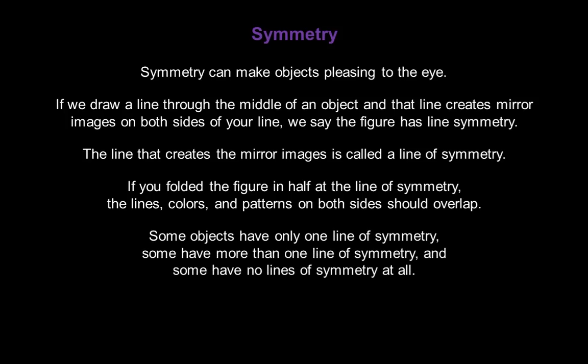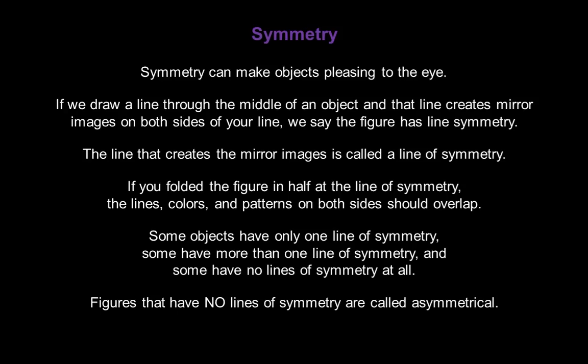Some objects have only one line of symmetry, some have more than one line of symmetry, and some have no lines of symmetry at all. Figures that have no lines of symmetry are called asymmetrical.